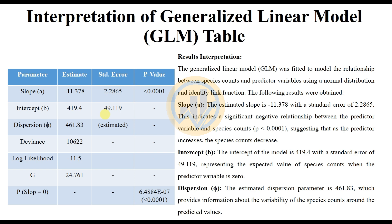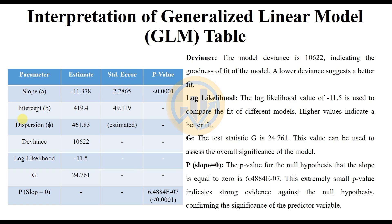The dispersion parameter is estimated at 461.83, which provides information about the variability of species count around the predicted values. The model deviance is 10622, indicating the goodness of fit — a lower deviance suggests a better fit. The log-likelihood value is -11.5, used to compare the fit of different models; a higher value indicates a better fit.